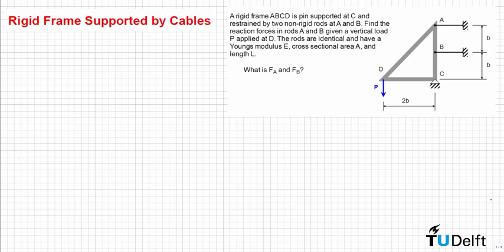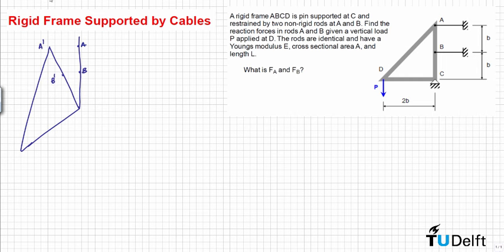In order to find the displacement compatibility equation, we consider the rotational deformation of the rigid frame ABCD, which rotates with respect to point C. The deformation of cable A, delta_A, is equal to the length of segment A to A', and the deformation of cable B, delta_B, is equal to the length of segment B to B'. Looking at the geometry, if the rotation angle is theta, then delta_A equals the horizontal distance to A times the tangent of theta, and similarly for delta_B.